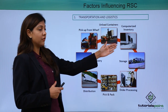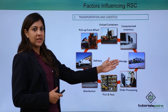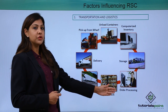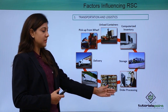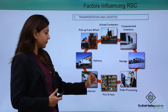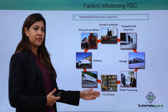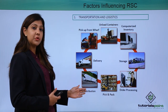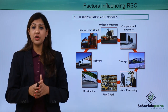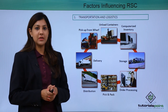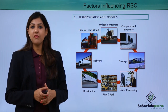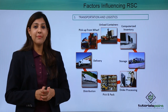Products are then stored in the warehouse or factories. Order processing happens based on orders received, followed by the pick and pack of the particular product, distribution, and ultimately delivery to a particular retail store or outlet. Transportation and logistics is therefore the number one factor that is critical in supply chain management.